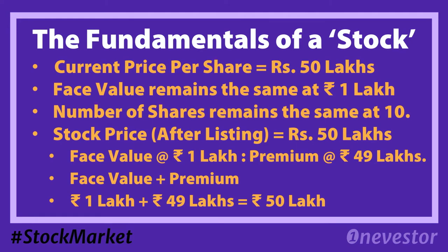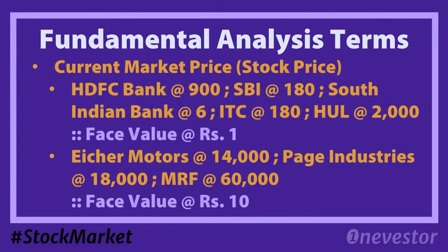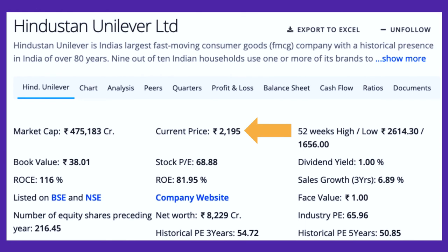You can check stock prices for different companies. For example, HDFC Bank trades at 900, SBI at 180, South Indian Bank at 60, ITC at 180, and Hindustan Unilever at 2,000. These market prices differ from their face values. High-priced stocks include MRF at 60,000 and Page Industries at 18,000. The face value of MRF, for instance, is 10. A financial portal shows the stock price at 1,000.